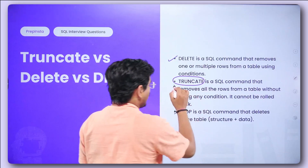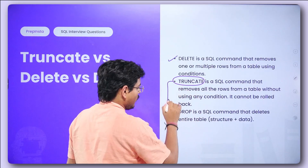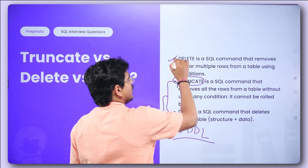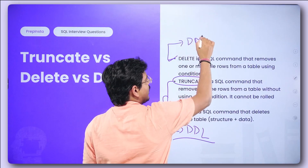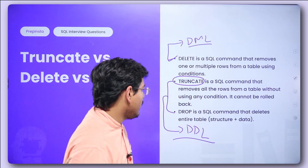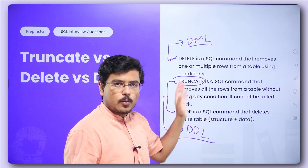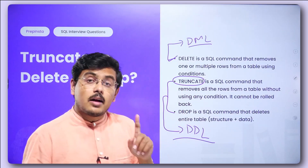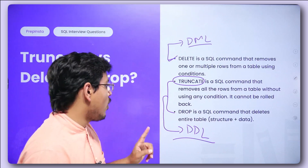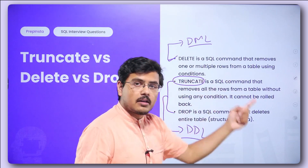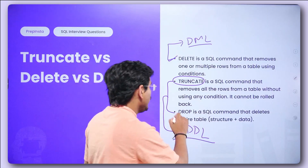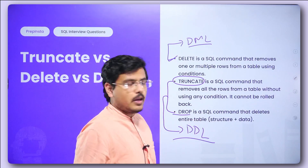Truncate and drop are both DDL — data definition language — whereas delete is from DML, data manipulation language. Remember, truncate deletes all the rows but not the table structure. If you want to delete the entire table including its structure as well as all the data, then you need to use the drop command.